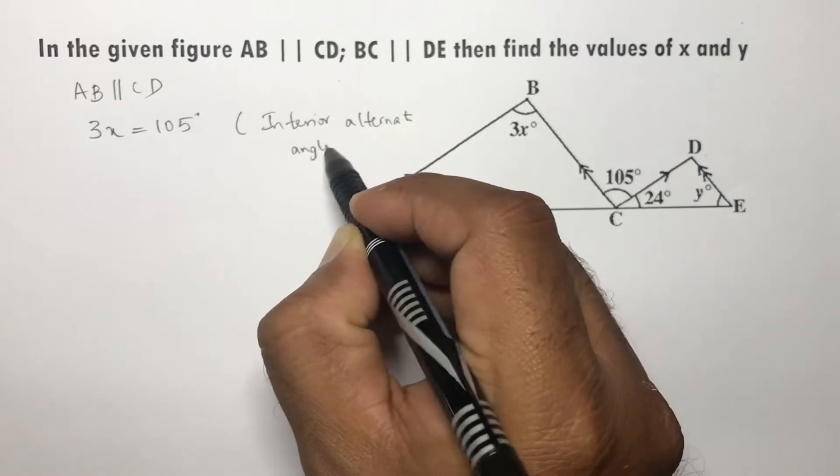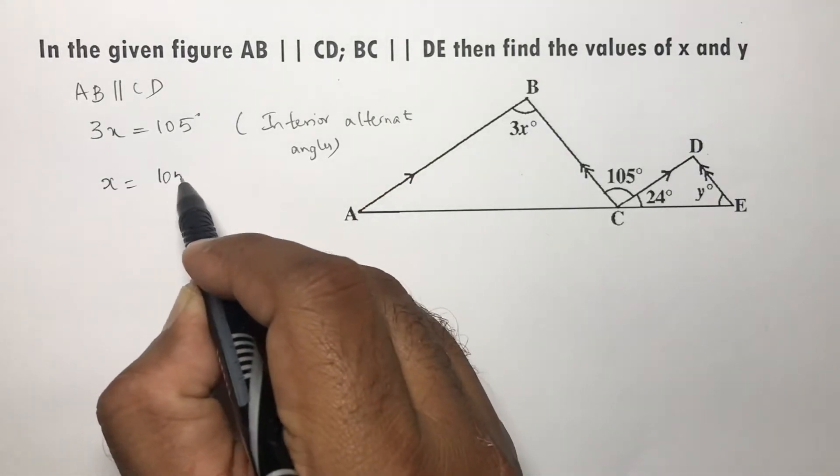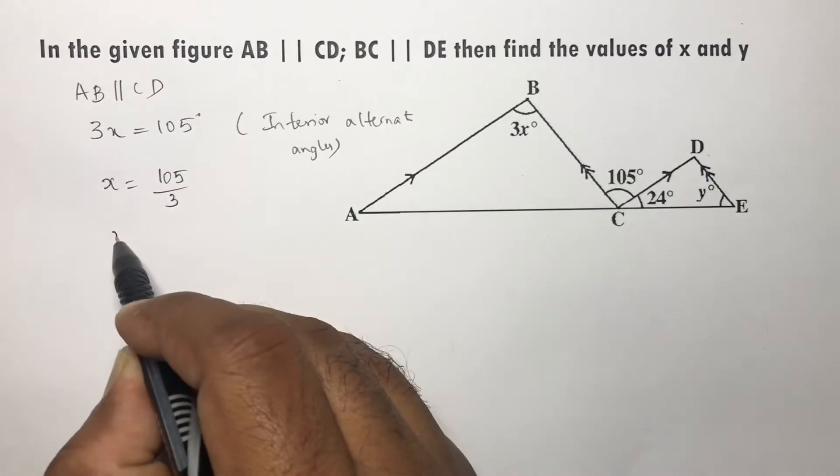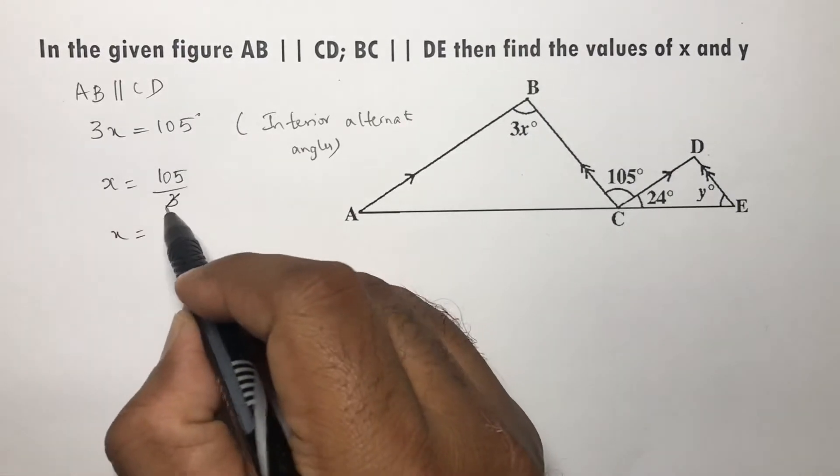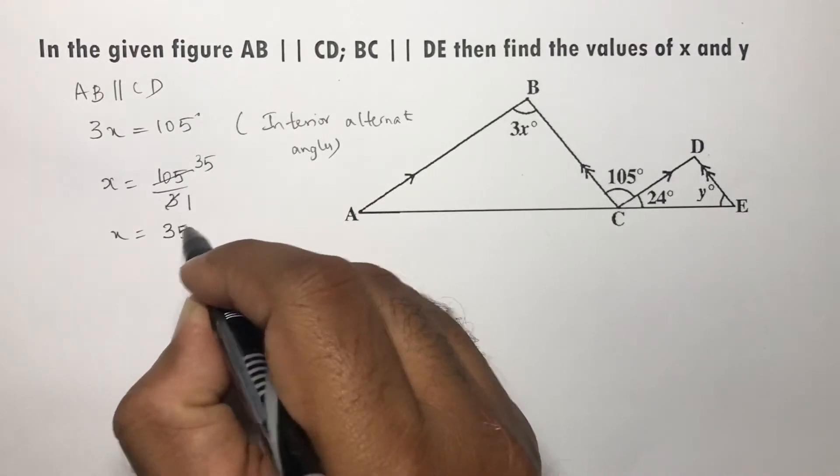Now, from here, the value of x is 105 by 3. So x equals 105 divided by 3, which is 35 degrees.